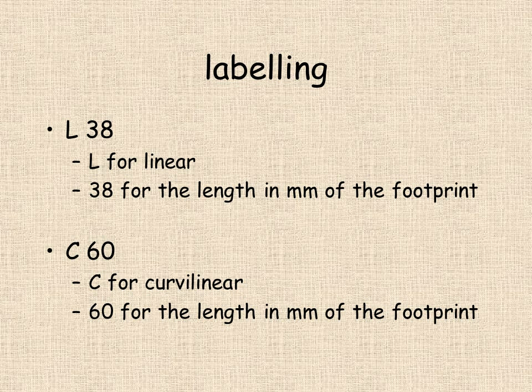Ultrasound probes are labeled using a combination of letters and numbers, such that an L38 probe is a linear probe depicted by the L, and this has a 38mm footprint when applied to the patient. A C60 is a curvy linear probe, which in this case has a footprint of 60mm, which would be most unsuitable for superficial scanning in the neck, because it's designed to look too deep and will be unwieldy when placed against the neck.